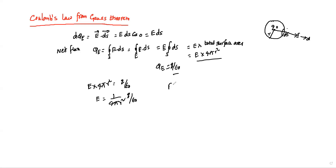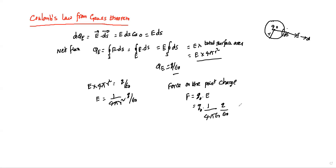What about the force on a unit charge? The force on a point charge is F equal to q naught into E. Substituting the value of E, we get q naught into 1 by 4 pi epsilon naught into q by r square. We can rewrite this as 1 by 4 pi epsilon naught into q q naught by r square. Is this not Coulomb's law?